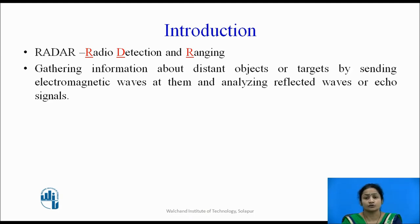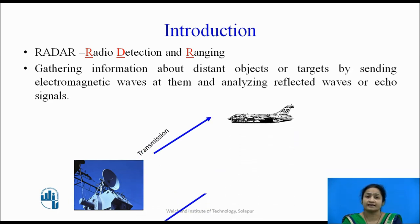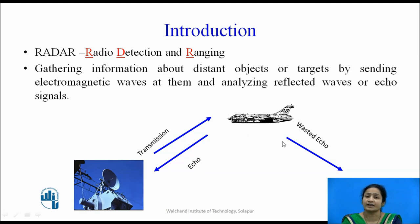Radar is nothing but gathering information about a distinct object or a target by sending electromagnetic waves at them and analyzing the reflected waves which are in the form of echo signals. In this diagram, we see that a transmitter station transmits signals at the target whose range has to be determined. The received signals, which are in the form of echo signals — the reflected signals — are the echo signals. Some reflected signals will act as wedge signals. This is how the basic concept of radar works.